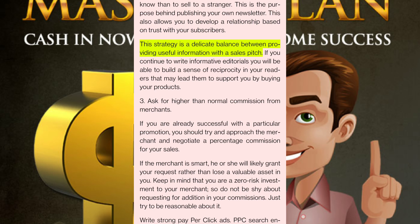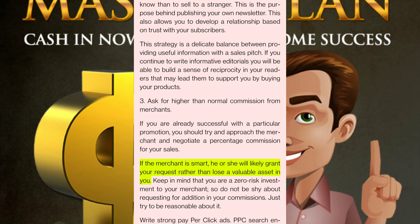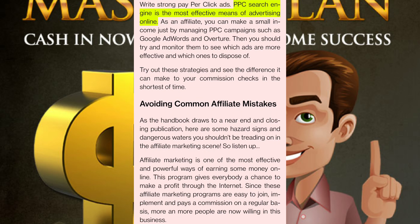This strategy is a delicate balance between providing useful information with a sales pitch. If you continue to write informative editorials you will be able to build a sense of reciprocity in your readers that may lead them to support you by buying your products. Three: ask for higher than normal commission from merchants. If you are already successful with a particular promotion, try and approach the merchant and negotiate a percentage commission for your sales. The merchant will likely grant your request rather than lose a valuable asset in you. Write strong pay-per-click ads — PPC search engines are the most effective means of advertising online. As an affiliate, you can make a small income just by managing PPC campaigns such as Google AdWords and Overture, then monitor them to see which ads are more effective and which ones to dispose of.